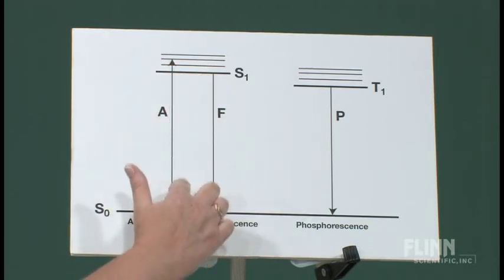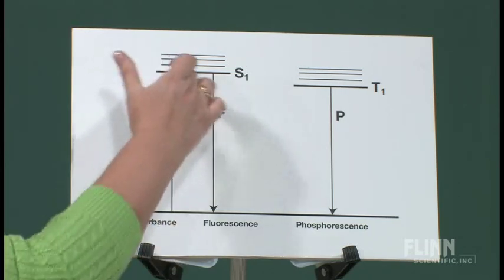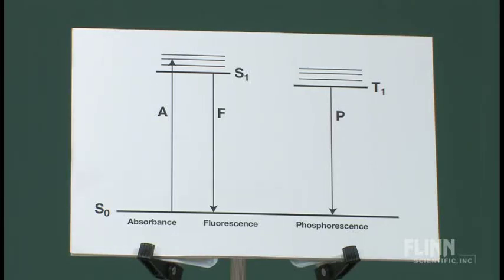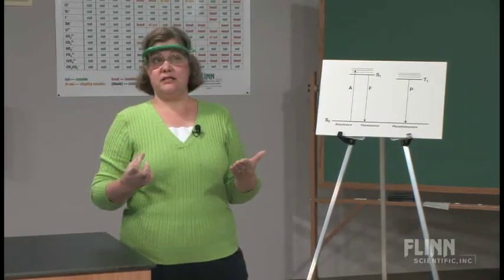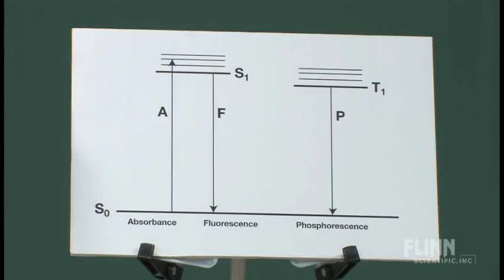As it goes from that S1 level back down to the ground state, you can see if you compare the amount of energy that is absorbed when it's radiated with ultraviolet light to the amount of energy that's released, there's clearly lower energy released than what is excited. So although it's excited in the ultraviolet range, the light that is emitted is in the visible range. That's fluorescence.